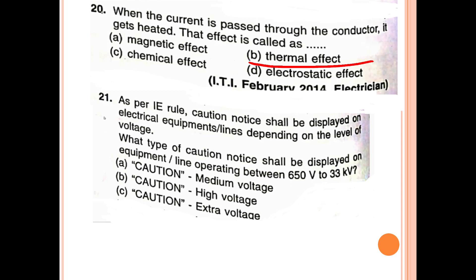As per IE rules, the caution notice shall be displayed on electrical equipment or lines depending on the level of voltage. What type of caution notice shall be displayed on equipment or lines operating between 650 volts and 33 kV? The answer is 'Caution High Voltage'.